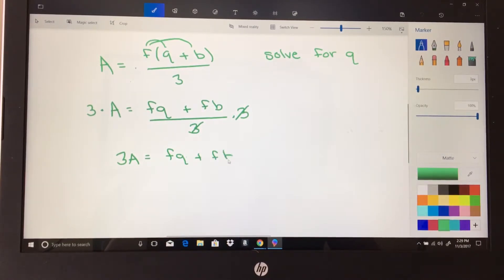So we start with what's furthest from q, which is this plus fb, and we will subtract it from both sides. I cannot do 3A minus fb, so I just end up writing them next to each other: 3A minus fb, and that's going to equal fq.